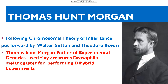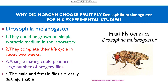Why did Morgan choose Drosophila for his experimental studies? These flies can be grown on simple synthetic medium in the laboratory — they can be easily cultured. Also, the life cycle of these insects is very short, about 2 weeks, and a single mating can produce a large number of progeny flies.